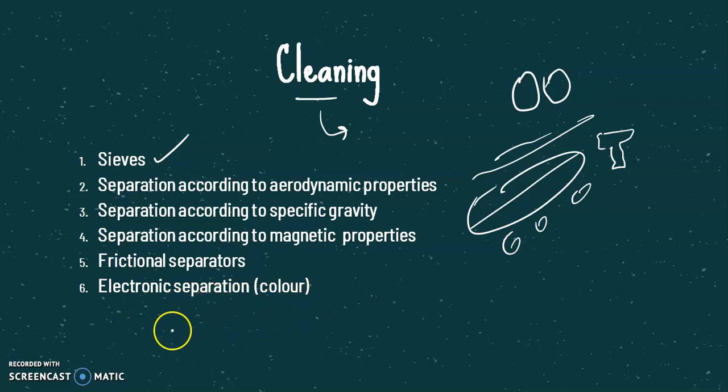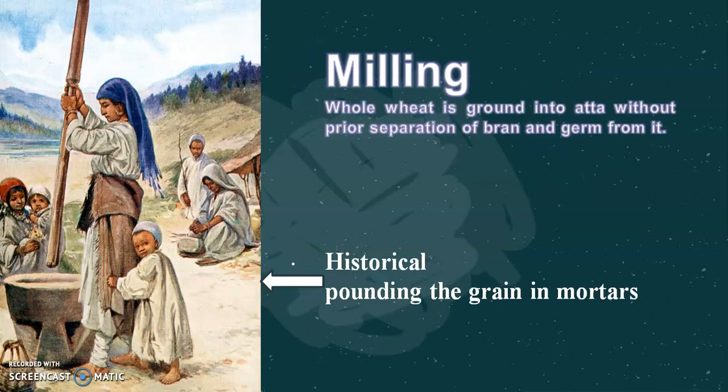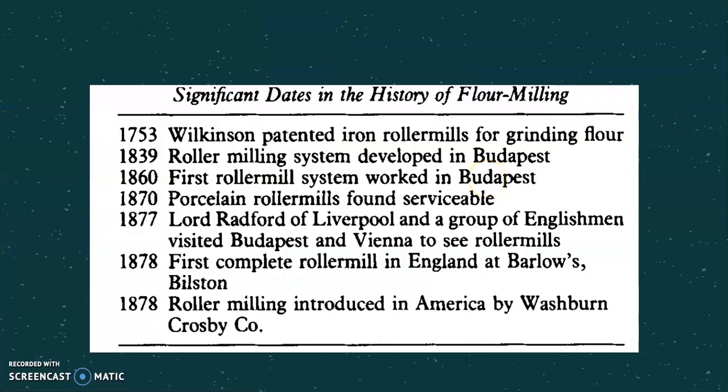As mentioned in this slide, in historical times wheat was ground by using pounding, but in pounding the whole wheat was ground and there was no separation of bran and germ. These are some historical developments and inventions related to wheat flour milling.